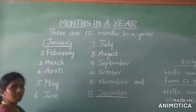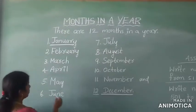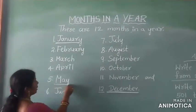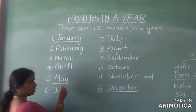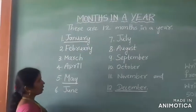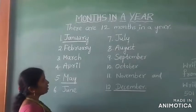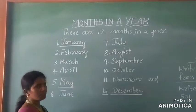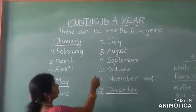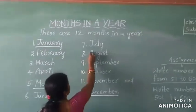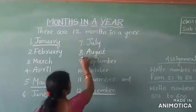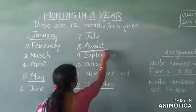Which is the fifth month of the year? May. The fifth month of the year is May. Which is the eighth month of the year? August. Which is the eighth month of the year? August.